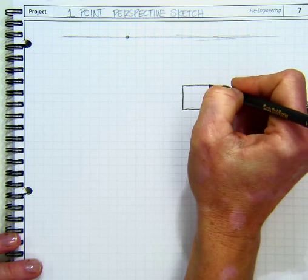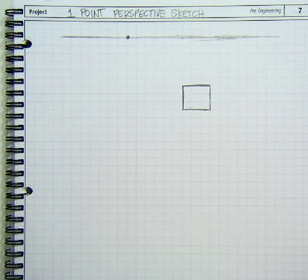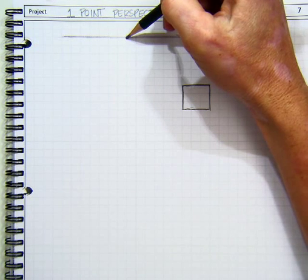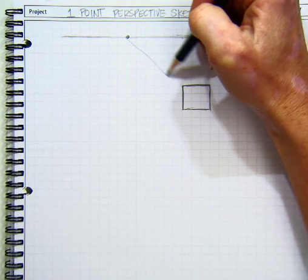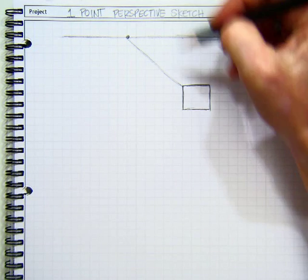So I'm starting with the front face of the cube. Next, everything else that we do goes back to my vanishing point. So I'm going to lightly draw construction lines from the corner of my object back to my vanishing point.